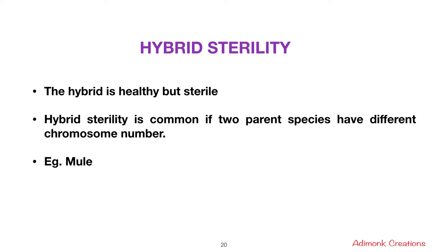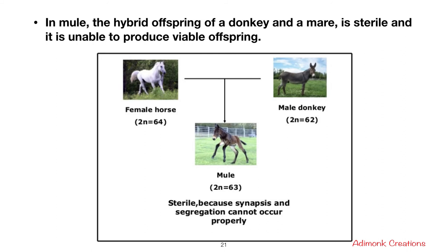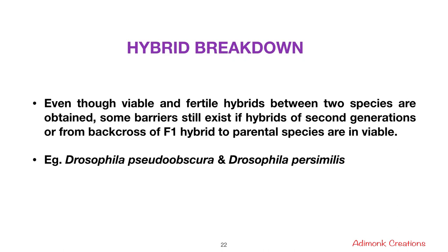Hybrid sterility is common when two parent species have different chromosome numbers. A classic example is the mule: the hybrid offspring of a donkey and a mare is sterile and unable to produce viable offspring, but the hybrid itself is a healthy individual.